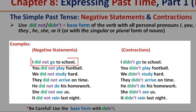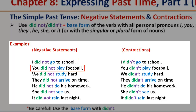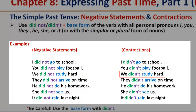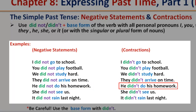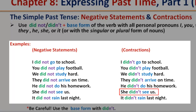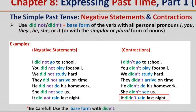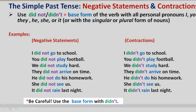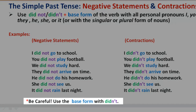Negative statements: I did not go to school / I didn't go to school. You did not play football / You didn't play football. We did not study hard / We didn't study hard. They did not arrive on time / They didn't arrive on time. He did not do his homework / He didn't do his homework. She did not see us / She didn't see us. It did not rain last night / It didn't rain last night. Remember, when using didn't, always use it with a base form.